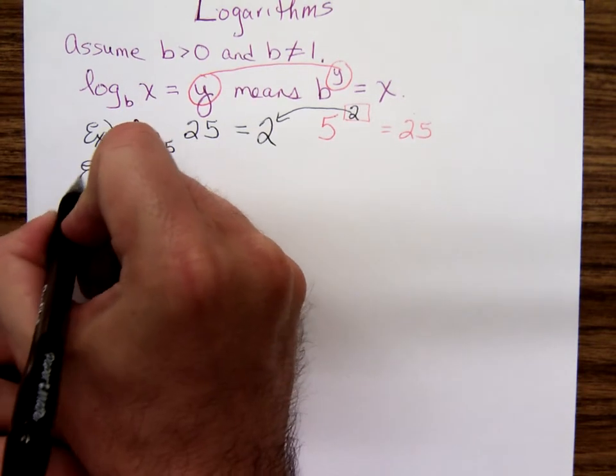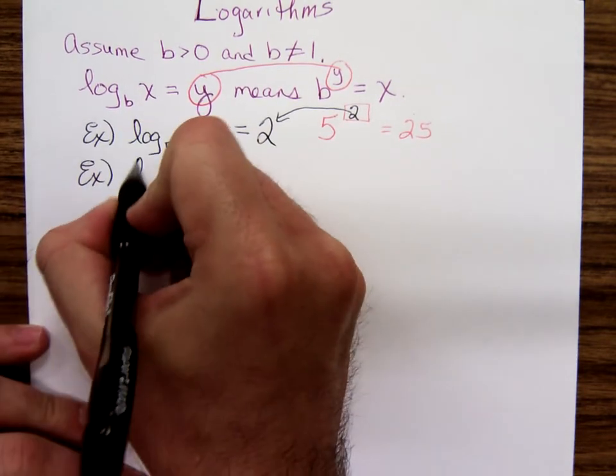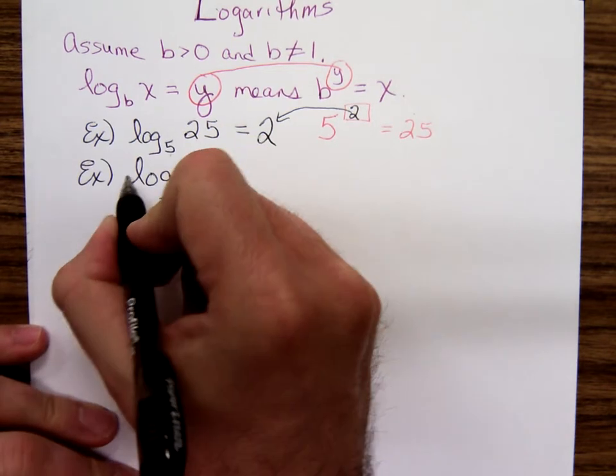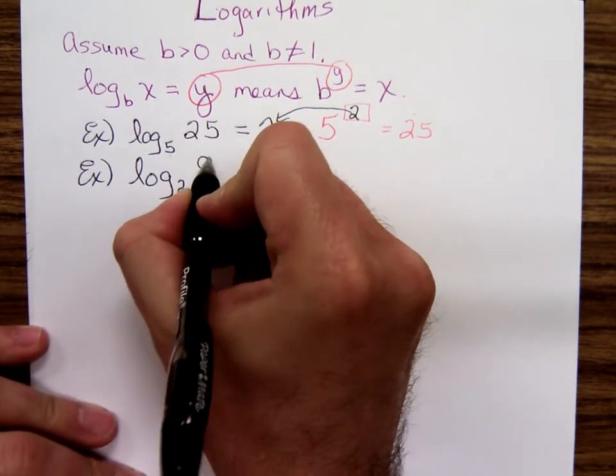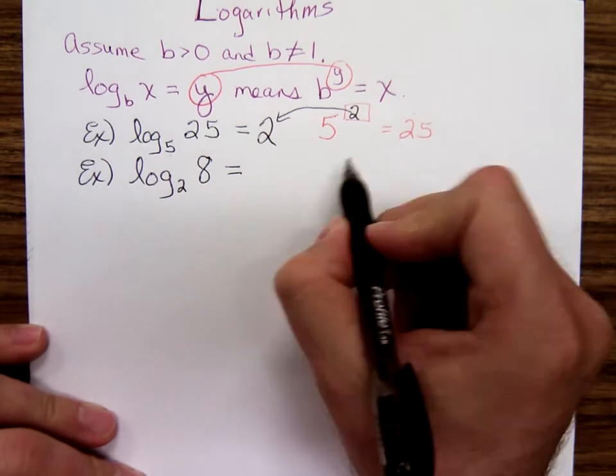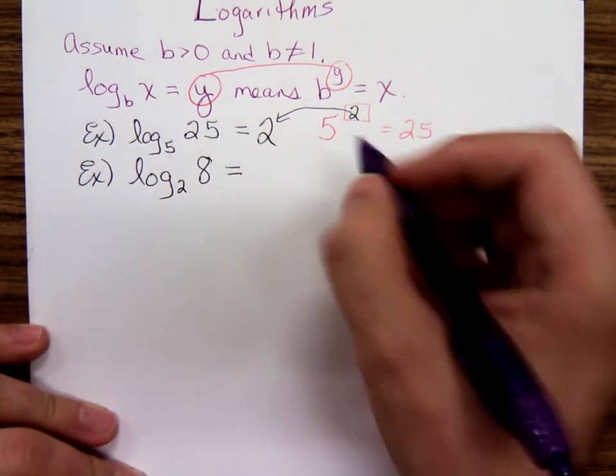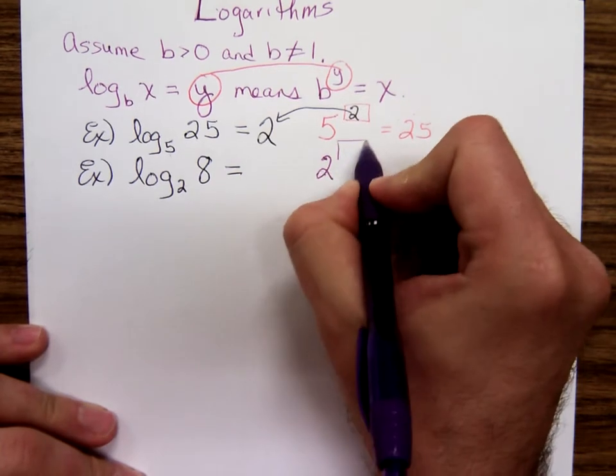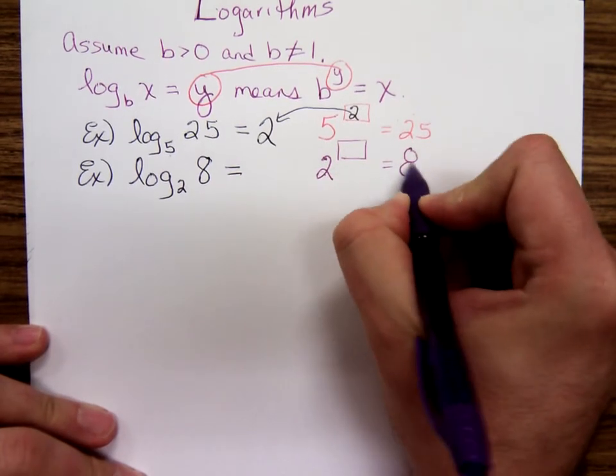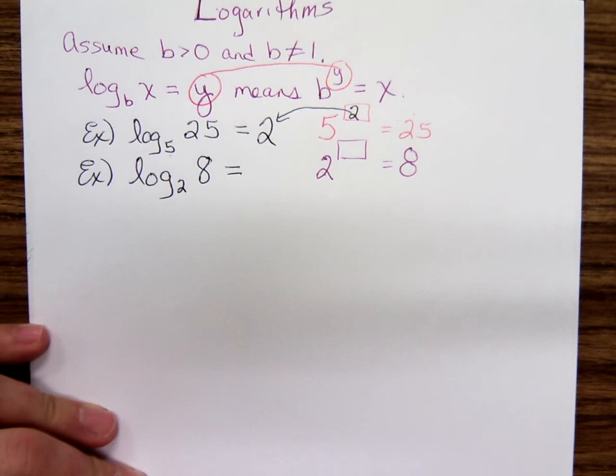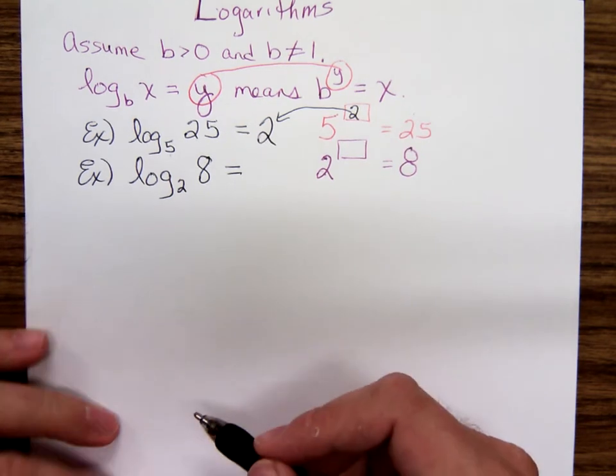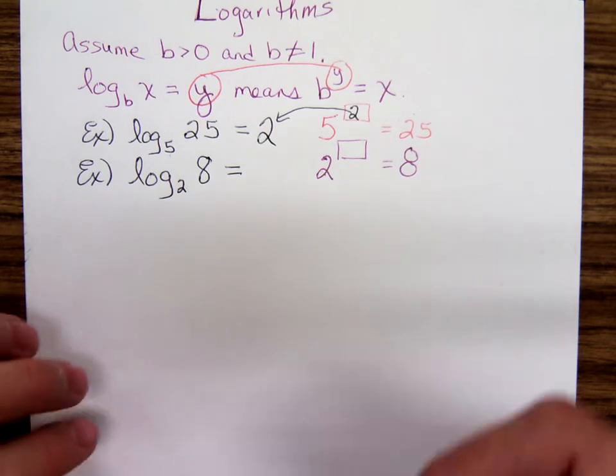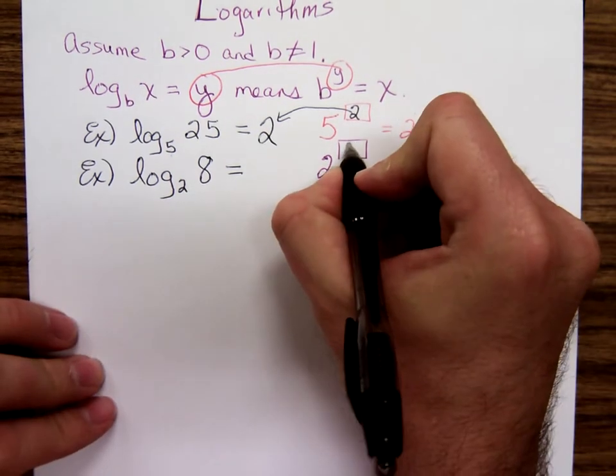What about this one? Log base 2 of 8. Don't say 4. You're thinking, what exponent do you put on 2 in order to get 8? How many 2s do you have to multiply together to get 8? 2 times 2 is 4 times another 2 is 8. So it's 2 to the third.